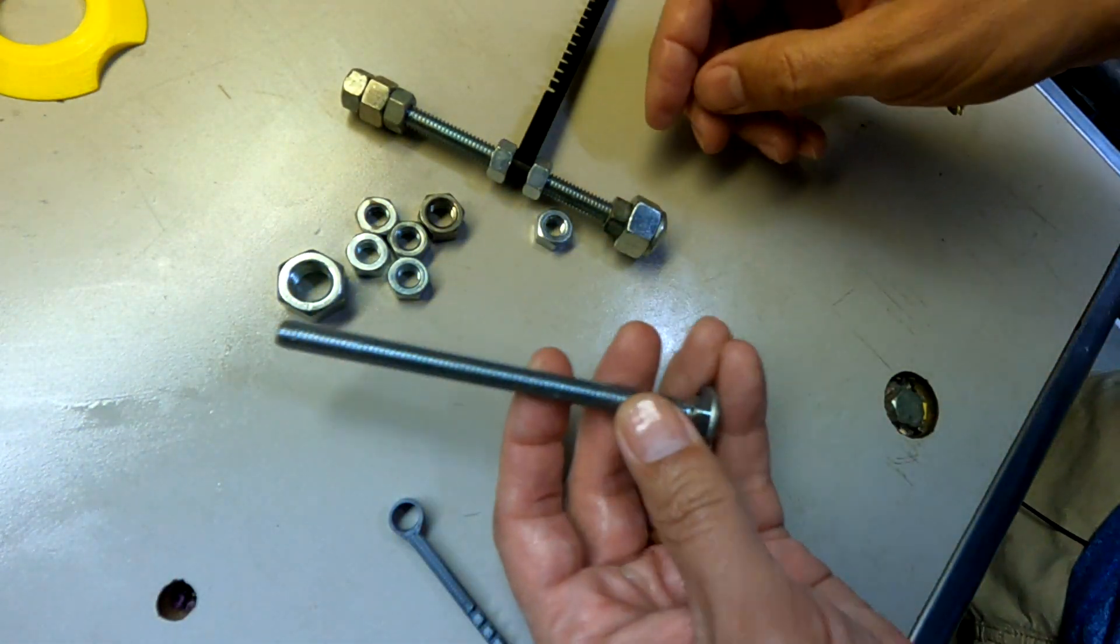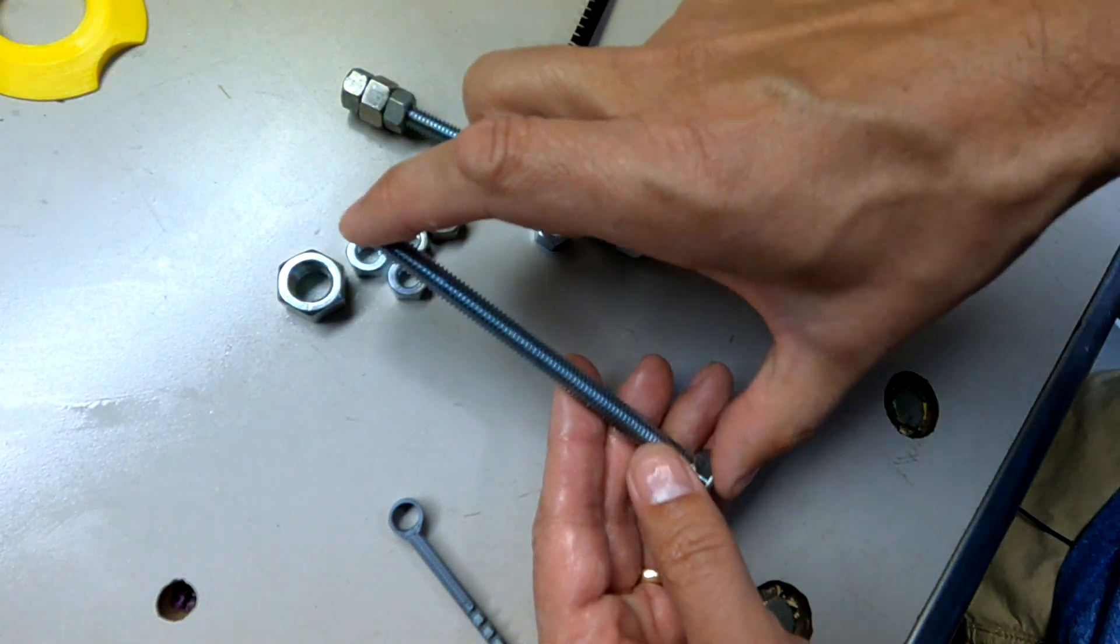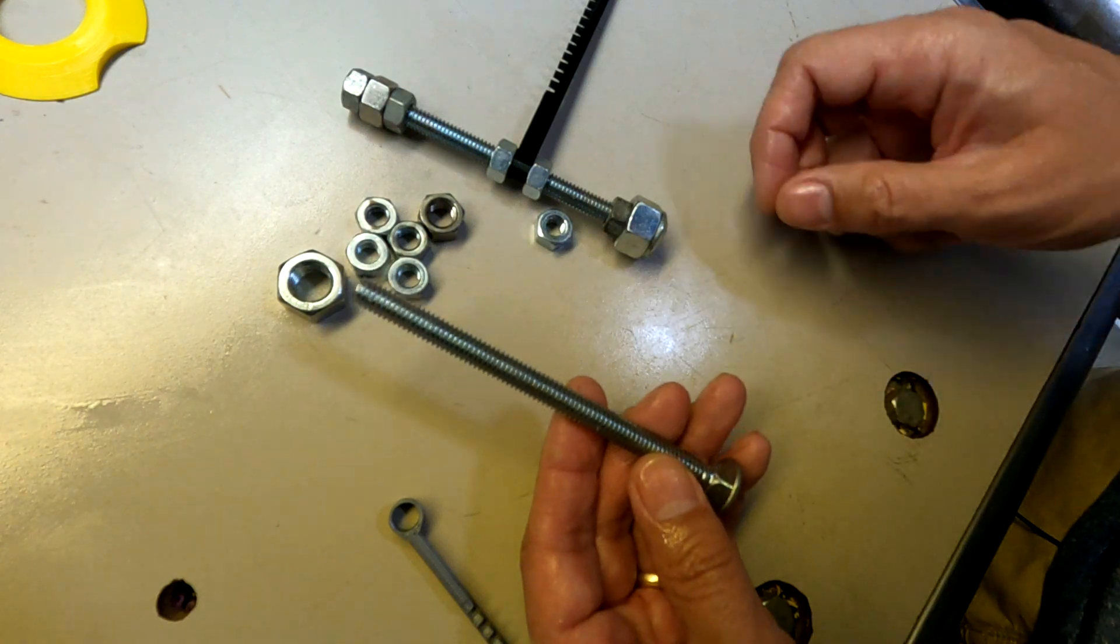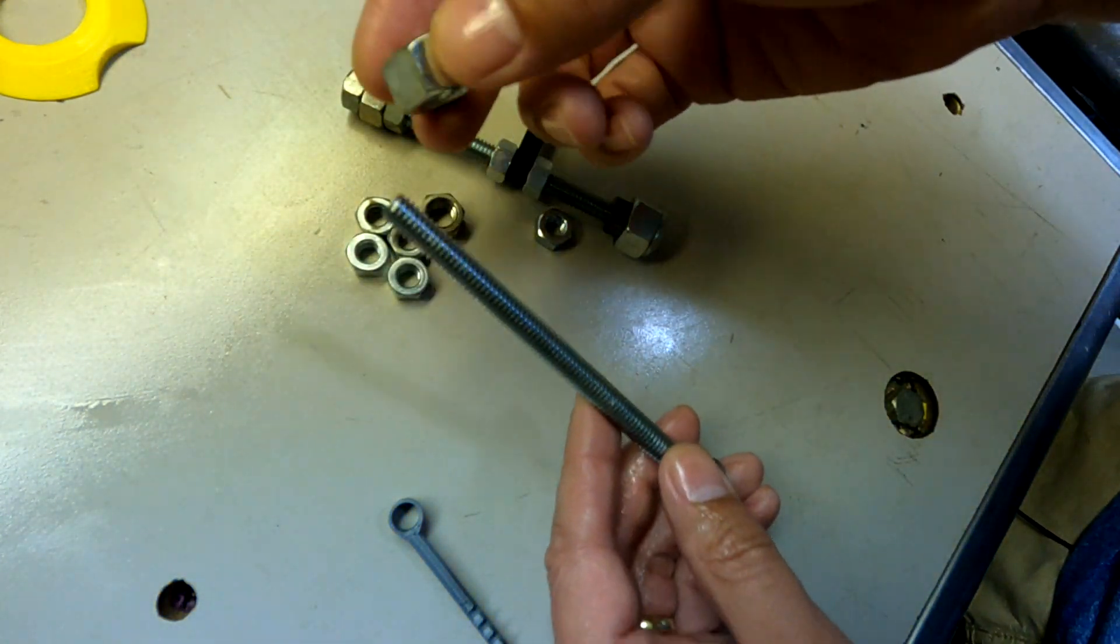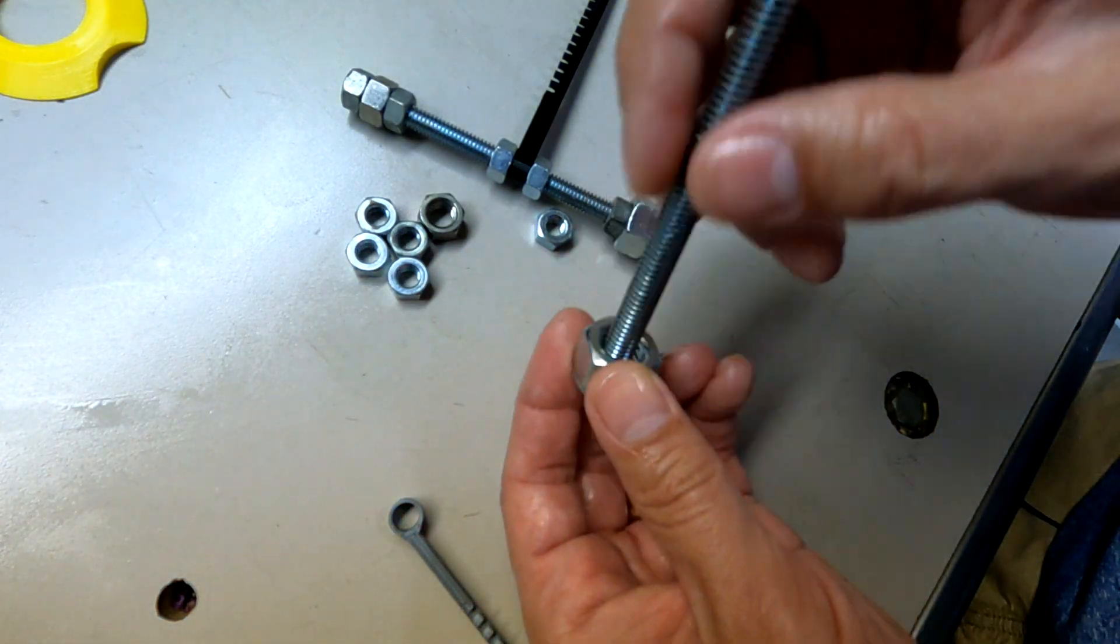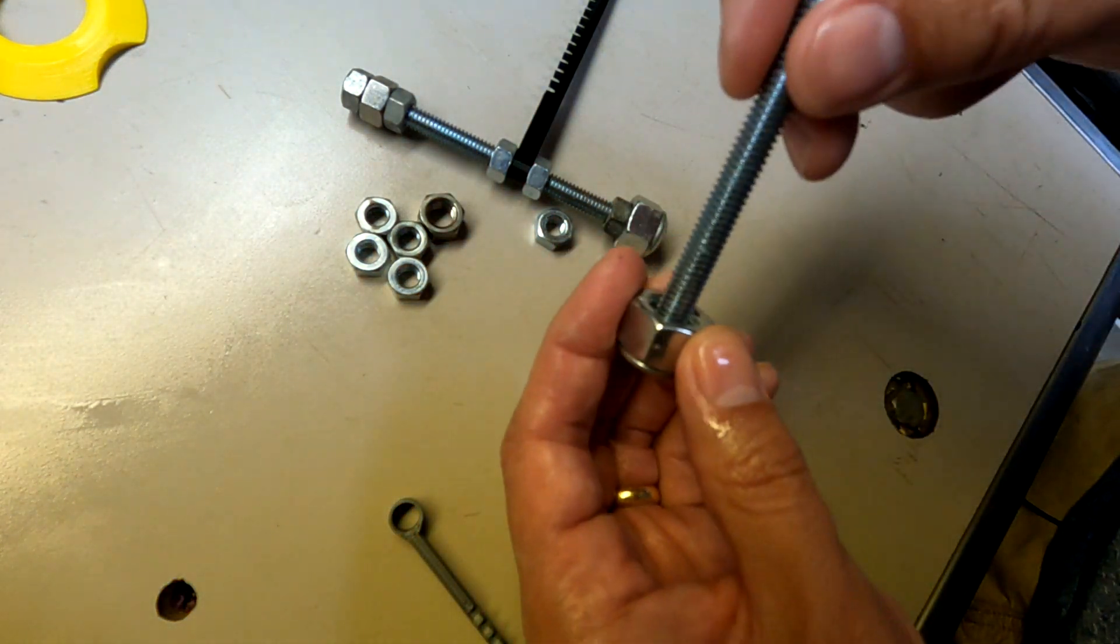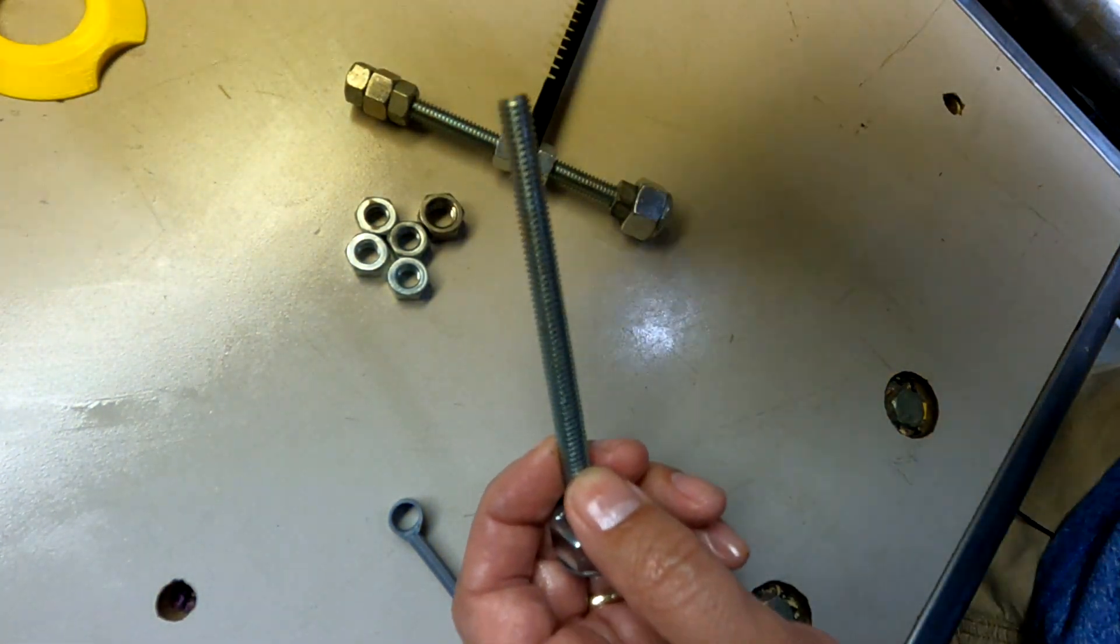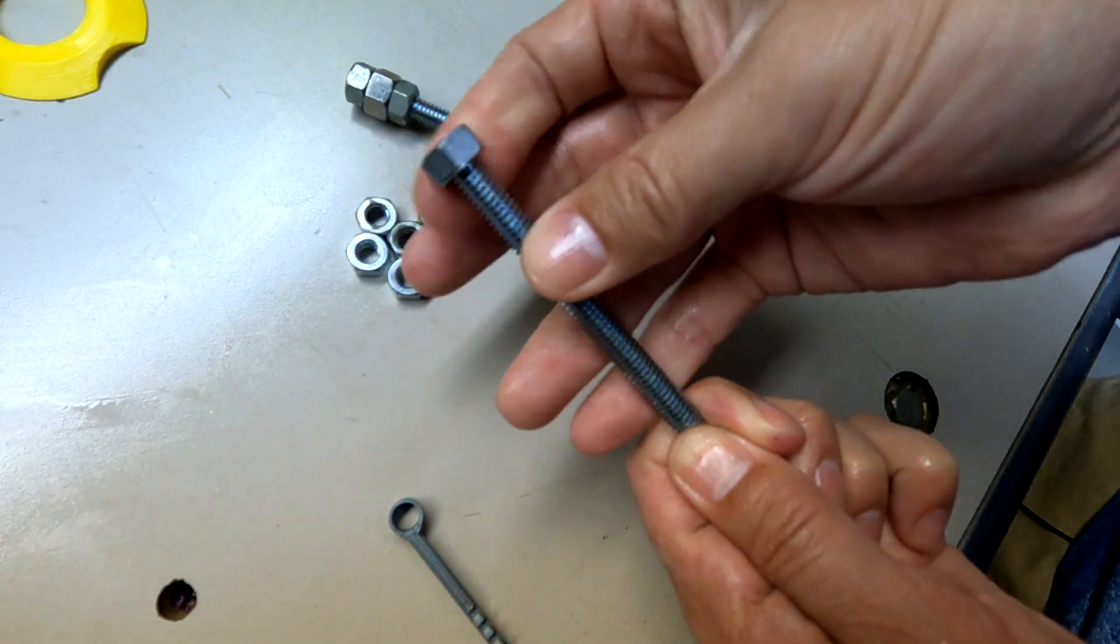So we're going to start by taking the bolt. This is a four and a half inch long carriage bolt, five sixteenths in diameter. And this is a half inch nut. It happens to slide on here and it goes right over top of that square protrusion on the underside of the head. And then we hold that in place with a five sixteenths nut.